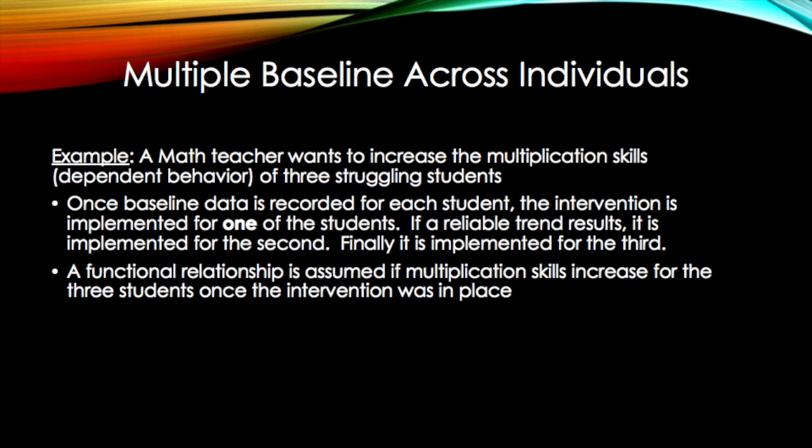An example of a multiple baseline across individuals is a math teacher who wants to increase the multiplication skills of three struggling students. Remember that the intervention is implemented for each student one at a time. If each student's multiplication skills increase after receiving the intervention, this shows a functional relationship.